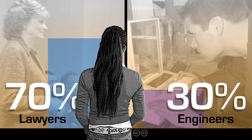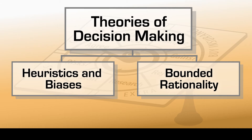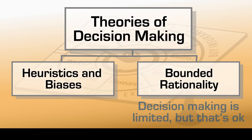Just based on the statistics, we should have said that the person chosen at random from the room was a lawyer. The other way of thinking about decision making in psychology is from the perspective of bounded rationality. Where that term 'bounded' comes from is these researchers recognize that our decision making is bounded, or constrained, or limited — and they say that's okay. Despite those constraints, we generally do pretty good decision making.